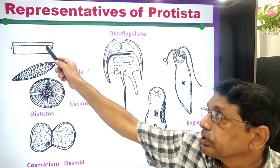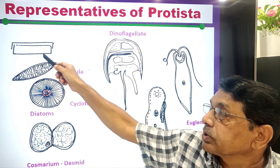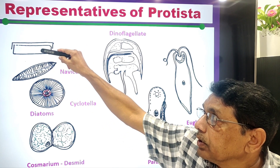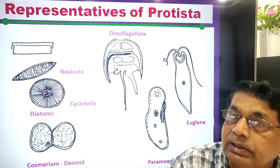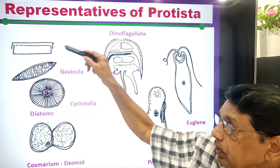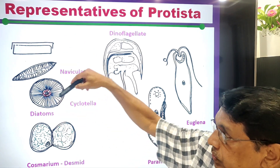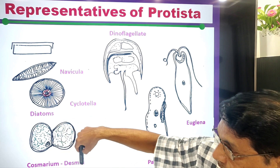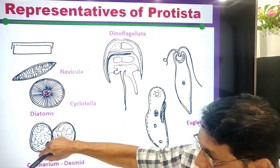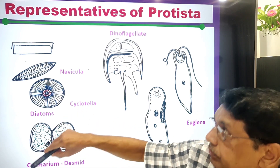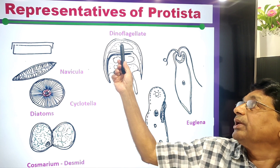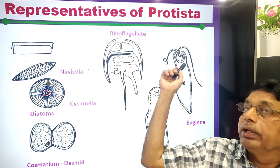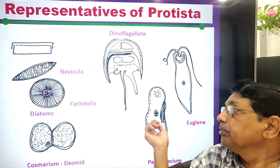Here you can see the soapbox-like structure of diatoms with upper epitheca and hypotheca, including Navicula and Cyclotella. These are desmids, including Cosmarium. Also shown are a dinoflagellate, Euglena, and Paramecium.